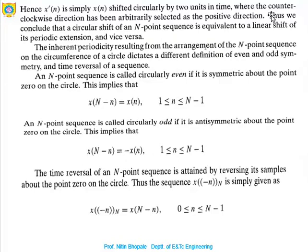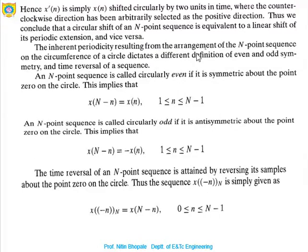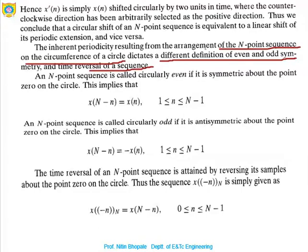This can be summarized as: x'(n) is simply x(n) shifted circularly by two units in time, where the counter-clockwise direction has been arbitrarily selected as the positive direction. Thus, a circular shift of an N-point sequence is equivalent to a linear shift of its periodic extension, and vice versa. The periodicity from arranging the N-point sequence on a circle dictates a different definition of even/odd symmetry and time reversal.